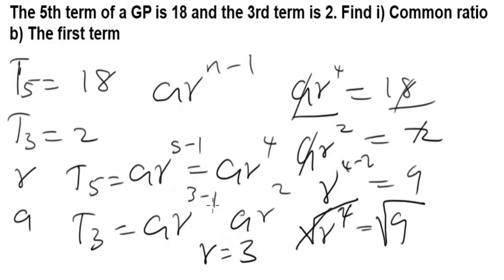Now that we have the common ratio, to get the first term is very simple. All we have to do is substitute this r in either this or this. Let's use the third term to do it. T3 equals ar^2, so it's going to be a times 3^2 equals 2. This becomes 9a equals 2.